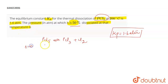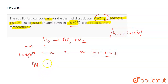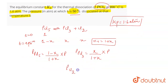Initially, the number of moles of PCl5 is 1. At equilibrium, x moles of PCl5 dissociate, forming x moles of PCl3 and x moles of Cl2. The total moles are (1 - x) + x + x = 1 + x. The partial pressure of PCl5 = (1 - x)/(1 + x) × P, partial pressure of PCl3 = x/(1 + x) × P, and partial pressure of Cl2 = x/(1 + x) × P.